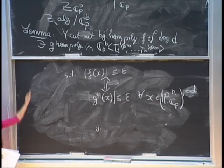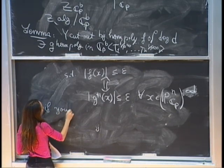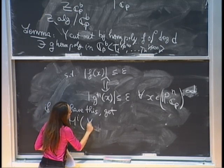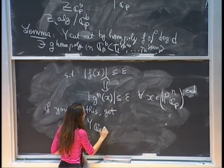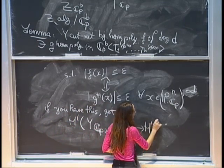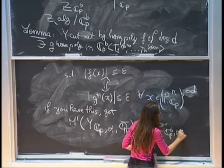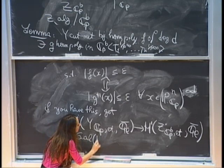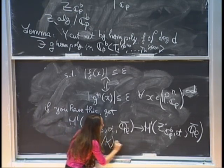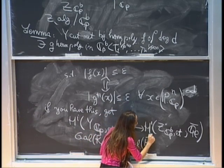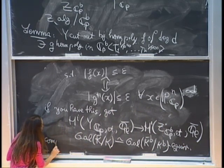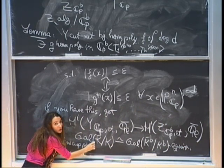If you can do this, you can find something algebraic inside the inverse image under the projection map of the tubular neighborhood of Y. If you have this, you get a map from H^i(Y_{CP}, ét, Q_l-bar) into H^i(Z_{CP}, ét, Q_l-bar).